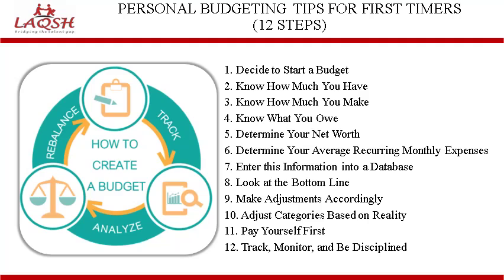The next step is to determine your average recurring monthly expenses. The best way to determine your monthly expenses is to make a stack of household expenses for a month. Keep your receipts, your utility bills and any other expense that arises during a one-month period and divide these bills into categories. The categories can be as general or as specific as you want them to be.